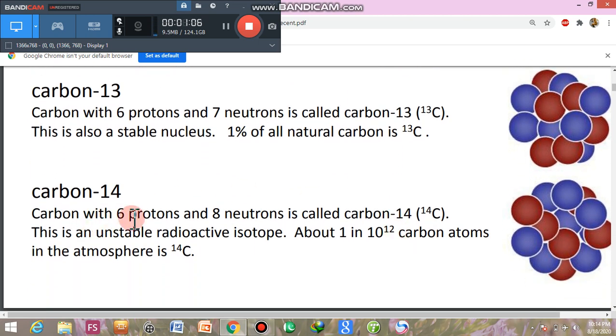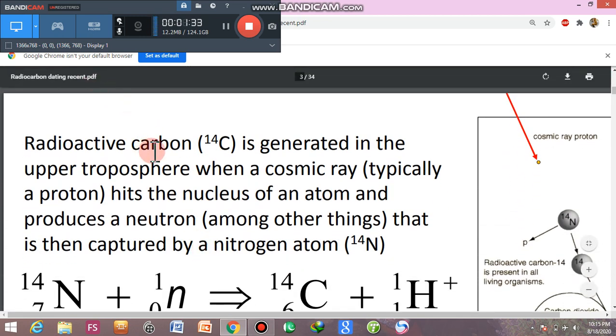Carbon-14. Carbon with 6 protons and 8 neutrons is the isotope known as carbon-14 form. This isotope is unstable as it is a radioactive isotope. It releases radiation from it. About 1 in 10 to the power of 12 carbon atoms in the atmosphere is in carbon-14 form. Radioactive carbon, how is it generated?